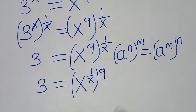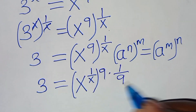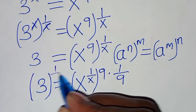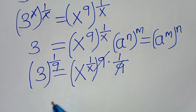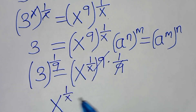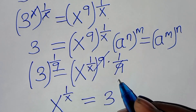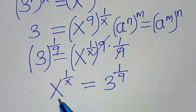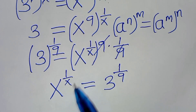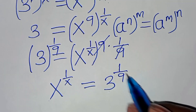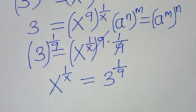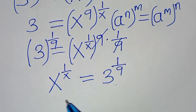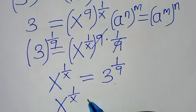The next step is to multiply both sides by 1 over 9, so 9 simplifies, giving us x to the power of 1 over x equal to 3 raised to the power of 1 over 9. On the left hand side the base and exponent are the same, but on the right hand side the base is not the same as the exponent, so we need to proceed until they match.